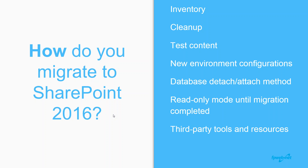One of the biggest pain points for end users during a migration is getting familiar with the new look and feel. The differences between 2007 and 2010 were far greater than the differences between 2013 and 2016, or even 2010 to 2016. There are a few upgrades to the look and feel, so it's recommended that you prepare your end users beforehand. Each new SharePoint version has the ability to maintain the previous version's look and feel. For example, if you are on 2013 and migrating to 2016, you can keep the sites looking like 2013 until your users are ready for the visual upgrade. The evaluation site collections feature gives you the ability to visually upgrade a site collection in a test mode to see how it will look before actually upgrading it permanently.